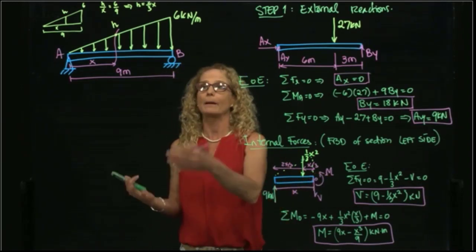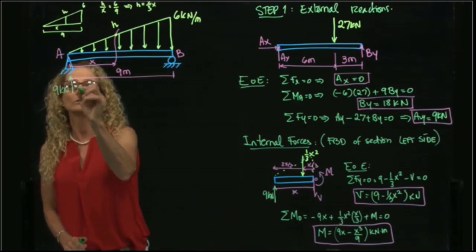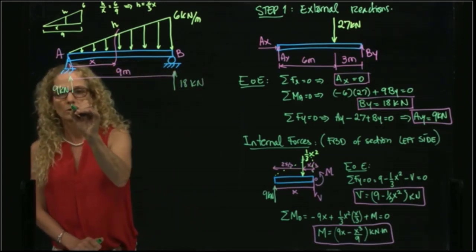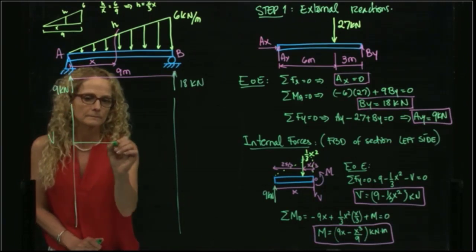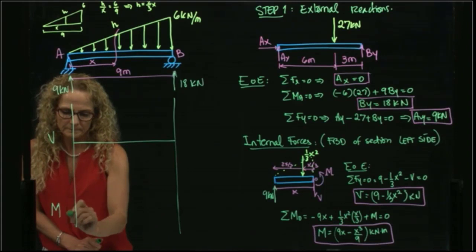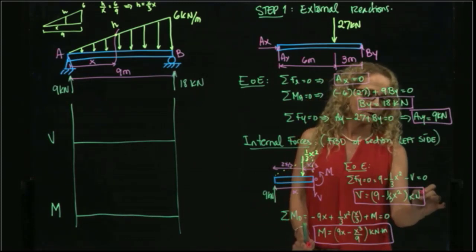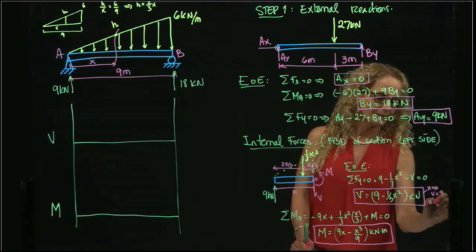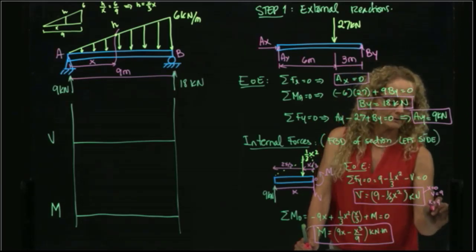Now that I have those values, I can draw my diagram. I will substitute. I have a concentrated load of 9 kilonewtons, and I have a concentrated load over here of 18 kilonewtons. I always like to evaluate my X. When I have X equals 0, my V is equal to 9. When X equals 9, I have 9 squared over 3 and negative 9. So my value of V is equal to negative 18.